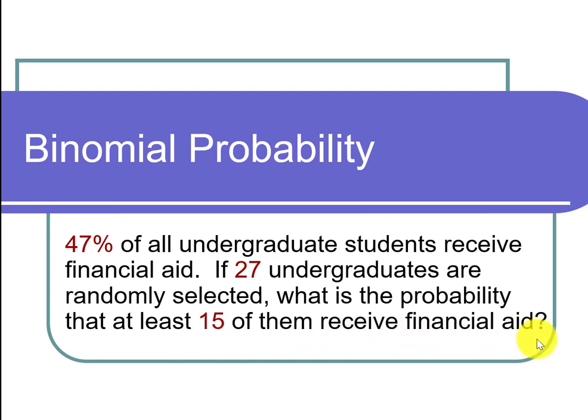Notice that this is a yes-no question for each of these students. We ask: do you receive financial aid? And the student says yes or no. We're doing many trials — in particular, 27 students are asked. So when we're in that situation, we can use a binomial distribution.